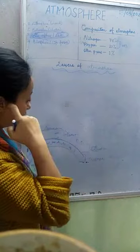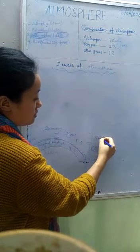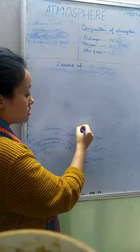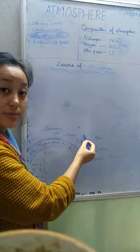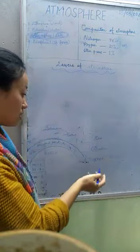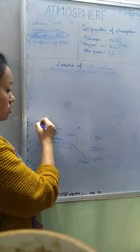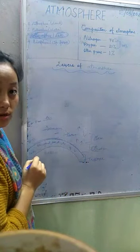Now let us move to another layer that is mesosphere. Here what happens is height increases, temperature decreases as in troposphere. Height increases and the temperature decreases here. So it extends from 50 to 80 kilometers and the air pressure here becomes very low.